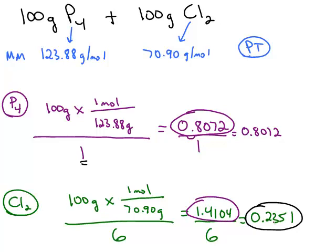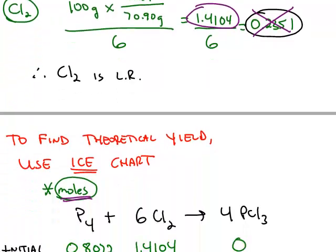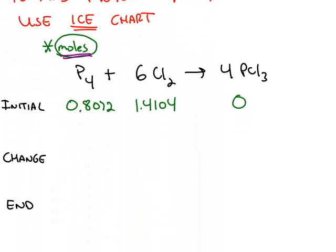So for the chlorine, I'm not using the 0.2351 number anymore. That was just to find the limiting reactant. What I need for the ICE chart is how many moles of each chemical I have. And notice, in this case, I'm starting with 0 moles of the product.